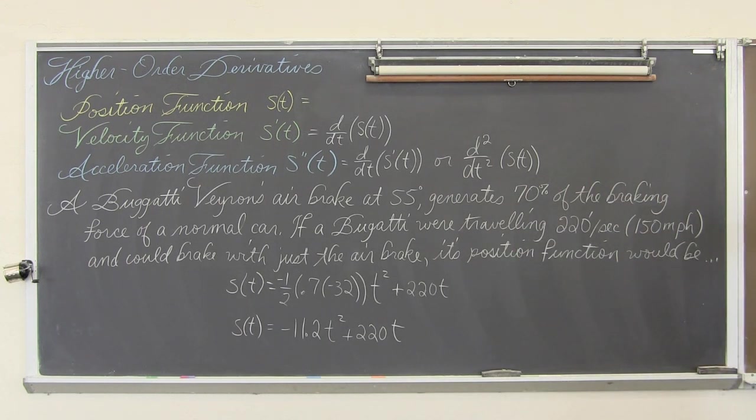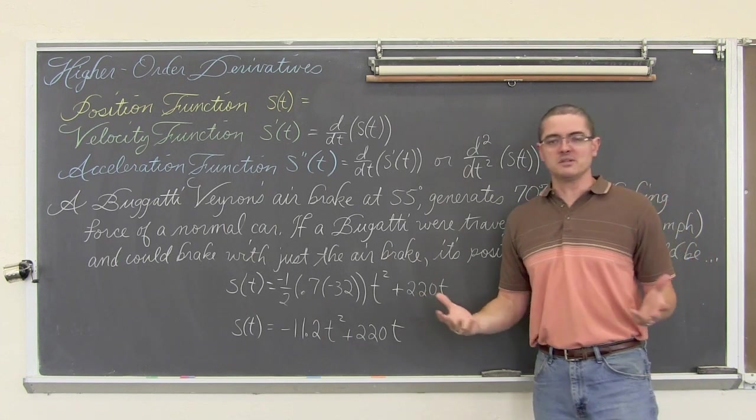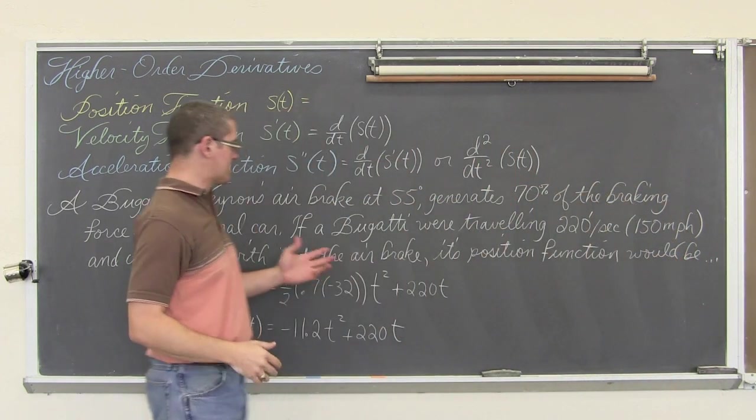If a Bugatti Veyron were traveling at 220 feet per second, which is 150 miles per hour, and could break with just the air brake, but why would? It has got these humongous brakes and brake discs.